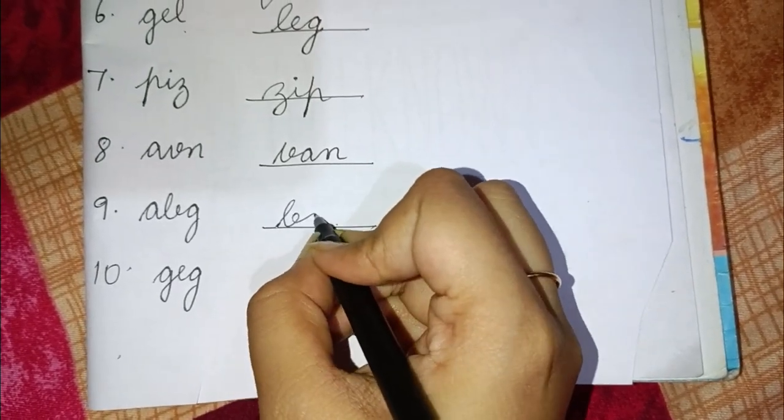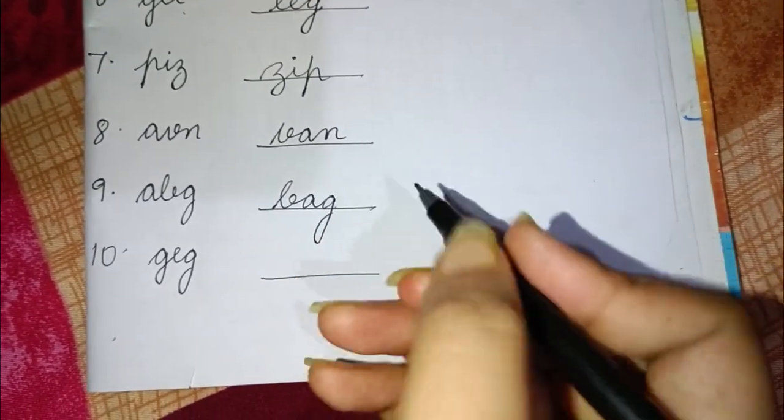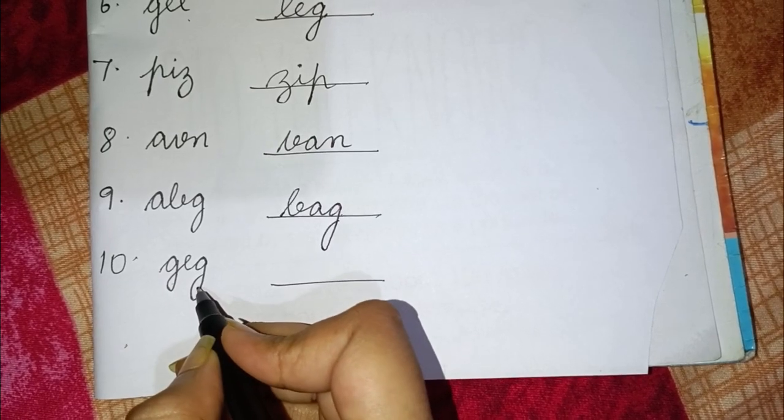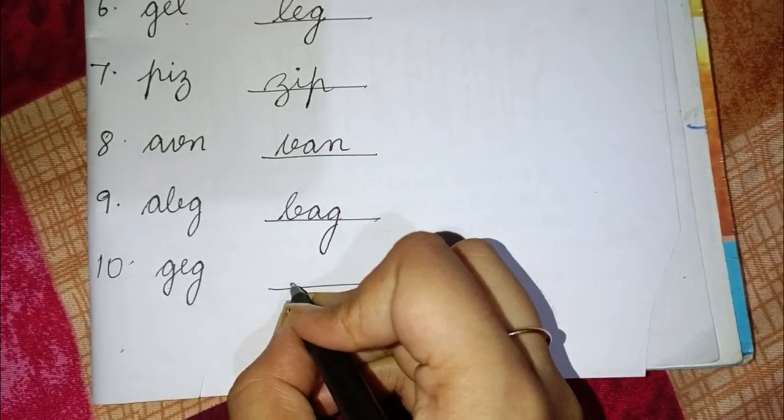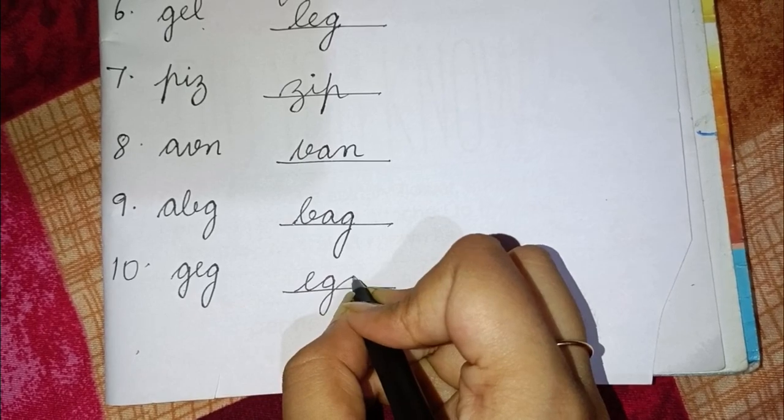Next is A B G. The correct word will be B A G bag. Now the last is G E G. This is wrong word. Correct word will be E double G egg.